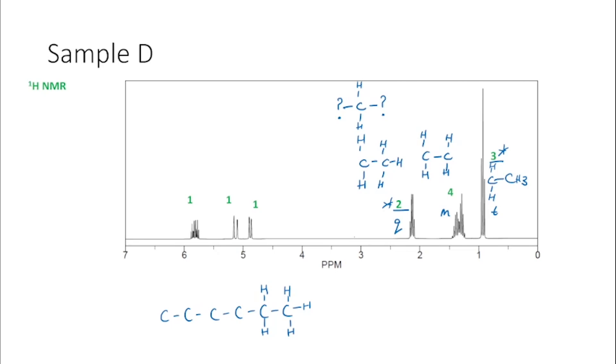Because what we have to decide next is where this alkene double bond is going to go. And that's where we'll be looking at these signals downfield in our spectrum. They all integrate for one proton.